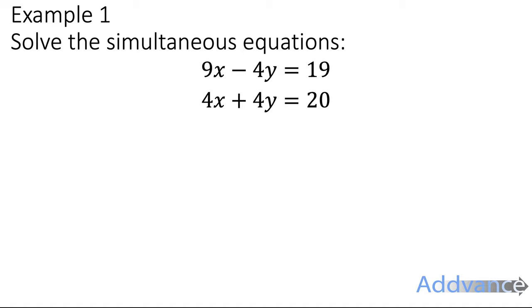Okay, so here's a set of simultaneous equations: 9x minus 4y equals 19, and 4x plus 4y equals 20. We're looking for an x and a y such that both of these equations work - the first one will be equal to 19 and the second one is equal to 20. And there is only one possible pair of one x and one y that works.